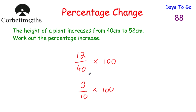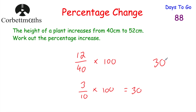We still have times 100. There are a couple of ways to do this — 3 tenths is 0.3 as a decimal, so 0.3 × 100 = 30%. Or you can find 3 tenths of 100: divide 100 by 10 to get 10, then multiply by 3 to get 30. So the percentage increase in the height of the plant is 30%.